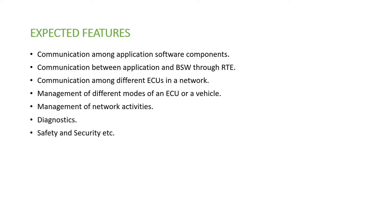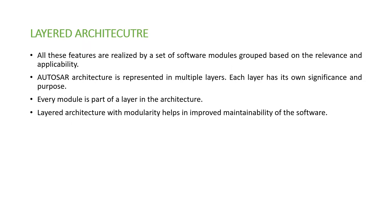So how can the BSW layer provide these features? They are represented in the form of a layered architecture. Based on the relevance of the features, they are categorized into several layers, with each layer containing different modules. All these features are realized by a set of software modules grouped based on their relevance and applicability.